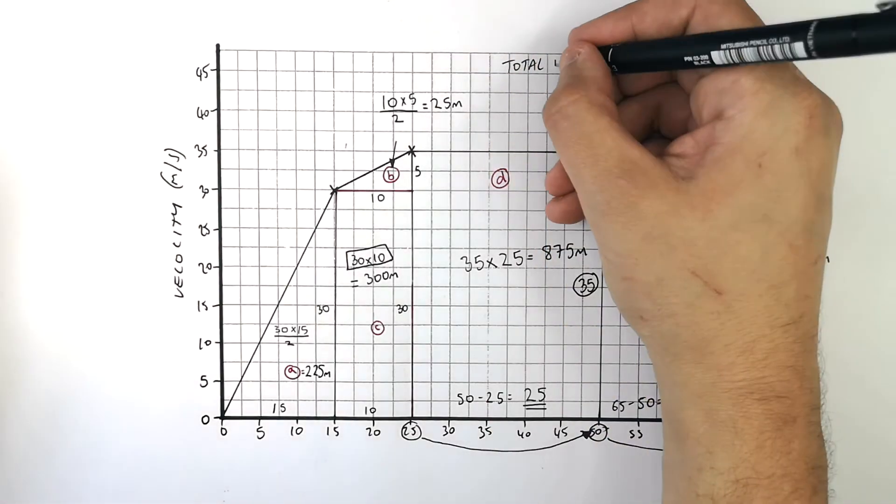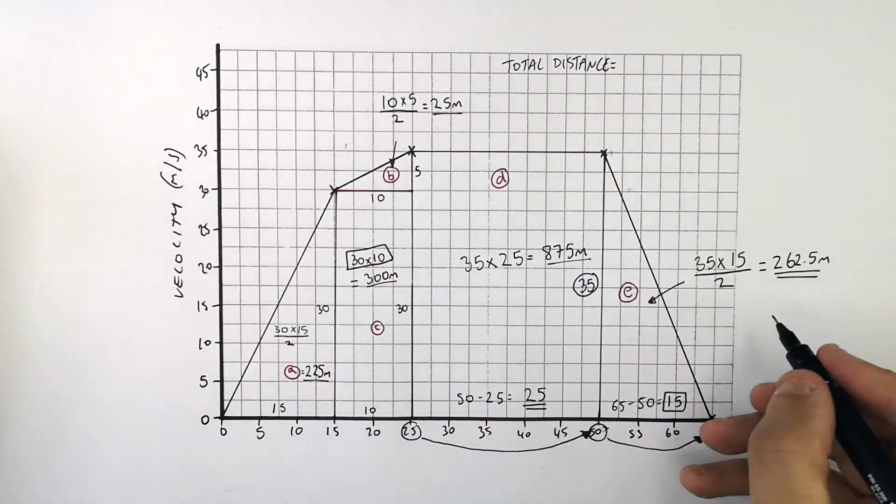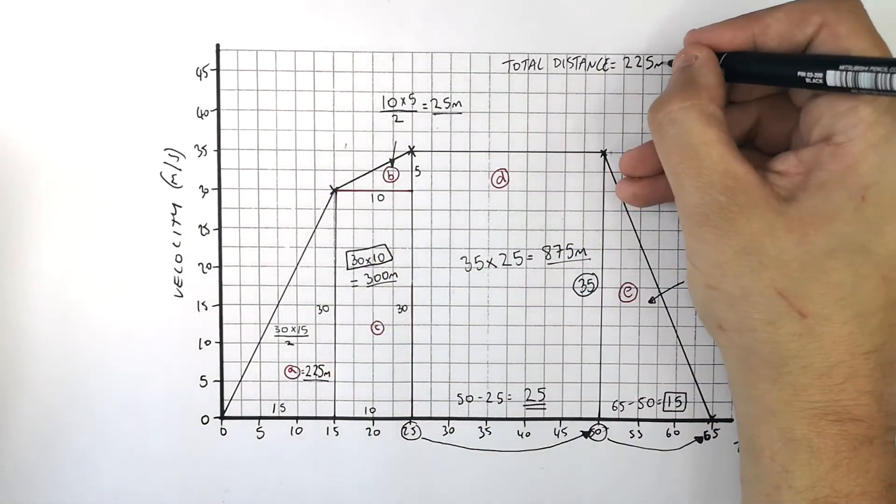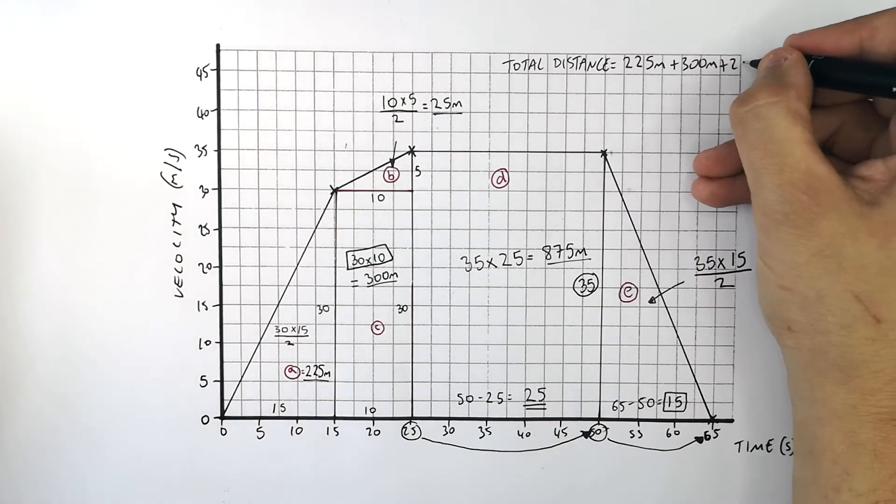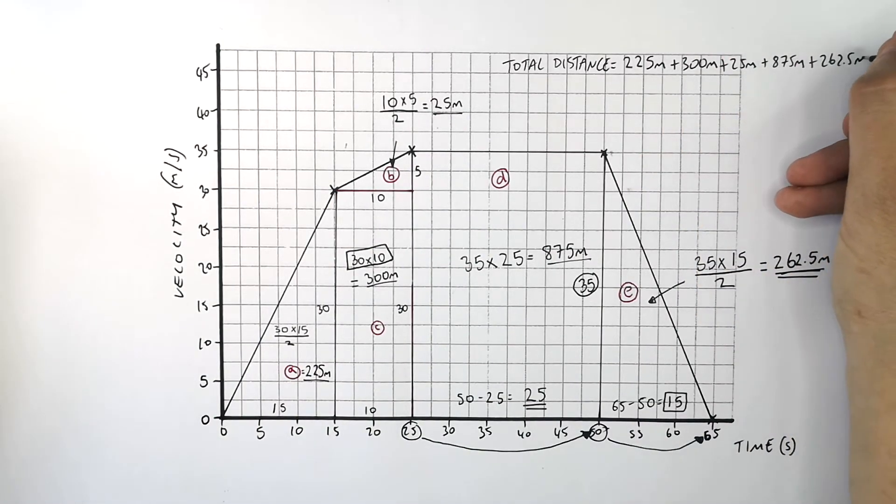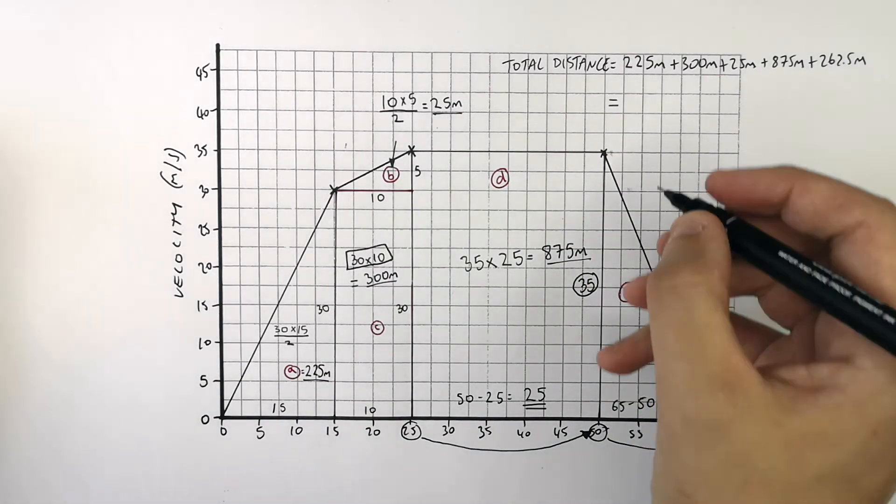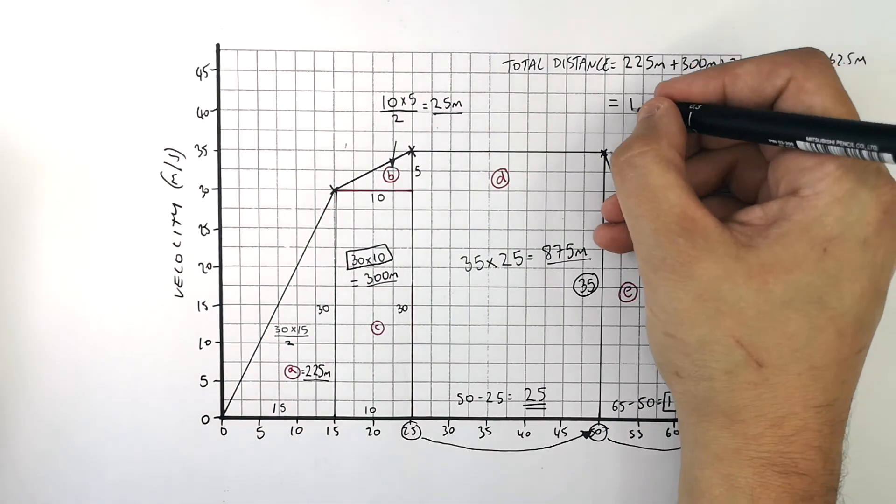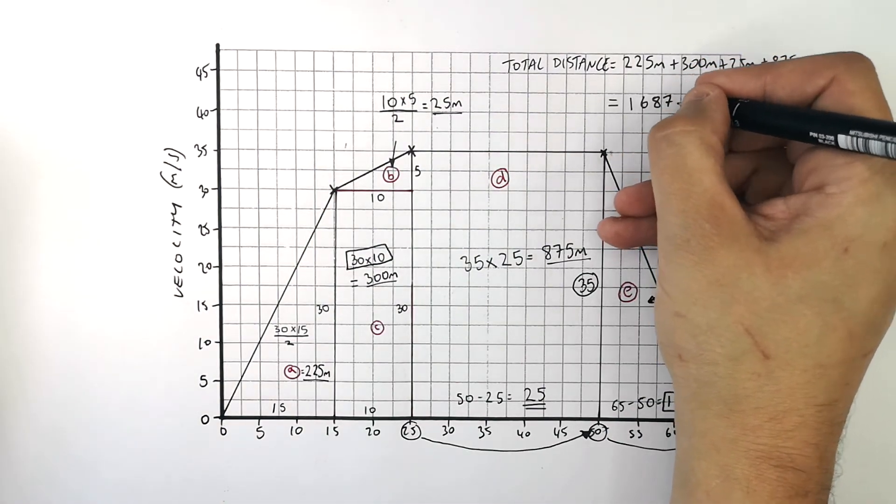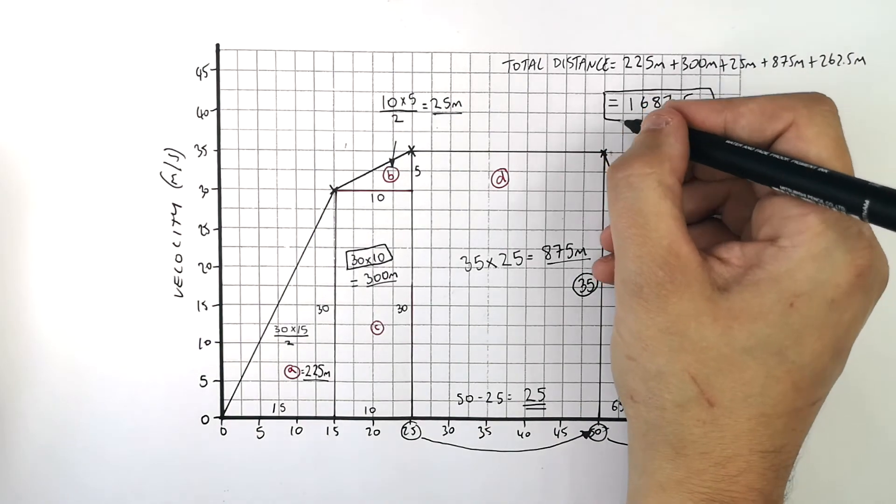And to calculate the total distance travelled during this journey you add all the distances together. So it's 225 plus 300 plus 25 plus 875 plus 262.5 metres. That gives you a total journey distance of 1687.5 metres. That's the total distance of the journey during this time.